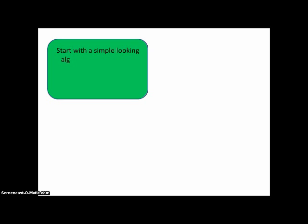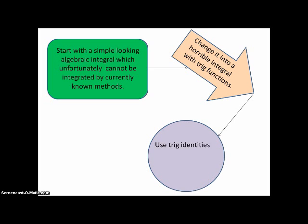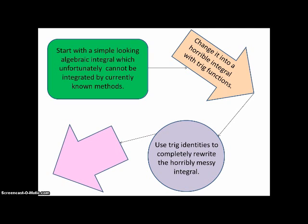Start with a simple looking algebraic integral which unfortunately cannot be integrated by currently known methods. The idea here is we're going to change the algebra into trigonometry and apply some identities to rearrange it. The next step is change it into a horrible integral with trig functions because the first step makes it look worse. But the whole idea here is that we will be able to rearrange it with identities and then end up being able to integrate it. Use trig identities to completely rewrite the horribly messy integral. It will probably still be pretty messy although occasionally it comes out pretty sweet. And then have fun integrating it. There's a couple of extra steps at the end that we'll look at in the examples.